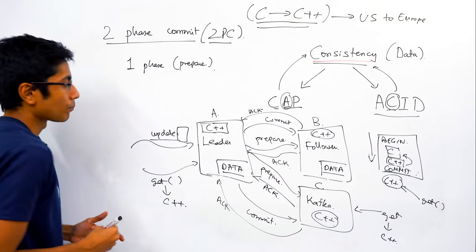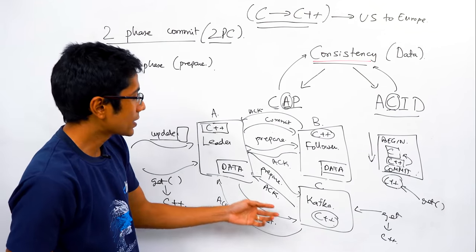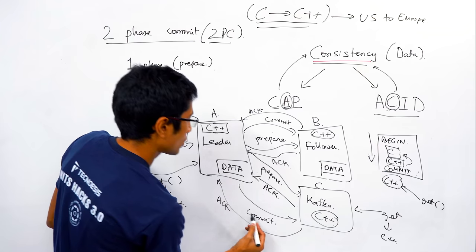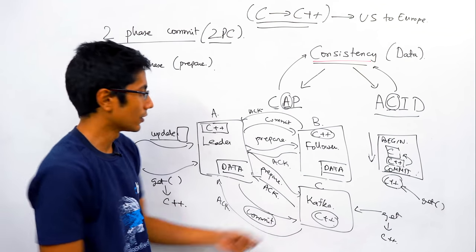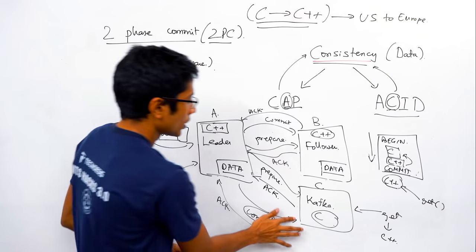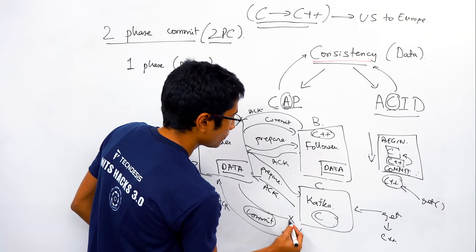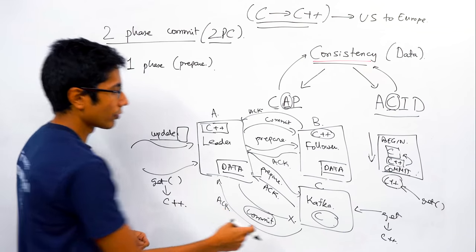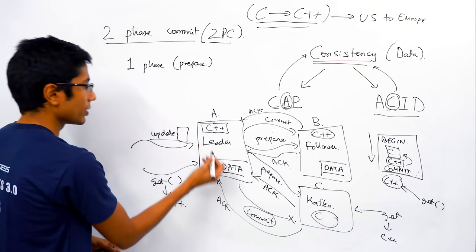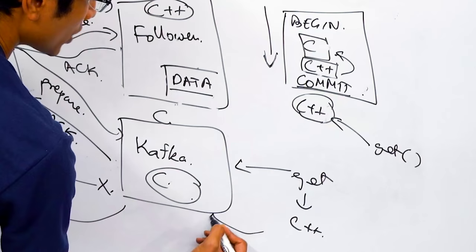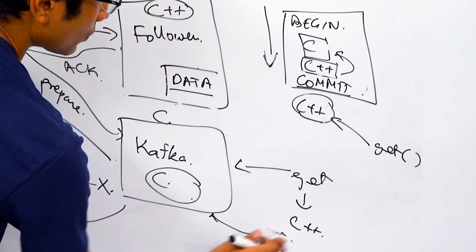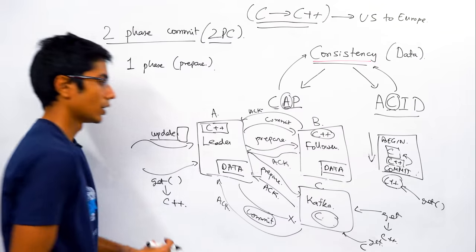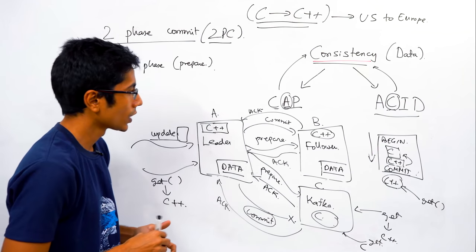Now let's assume one of the commit messages failed. After a certain period of time, the follower assumes the transaction has failed and rolls back — leaving it at C while the leader has C++. If someone does a get operation now, they get C, and we're in trouble — inconsistency. We can't allow this.